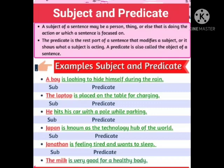See more examples of subject and predicate. 'A boy is looking to hide himself during the rain.' Who is looking to hide himself? A boy. So, 'a boy' is the subject because the main discussion is about a boy. What action or task is that boy performing? 'Is looking to hide himself during the rain' — so that is the predicate.